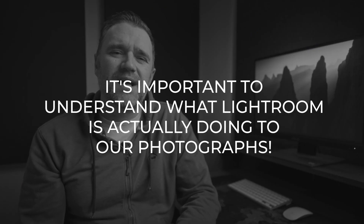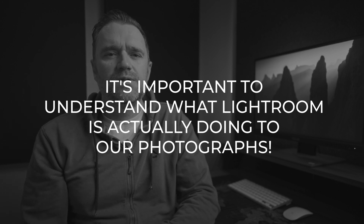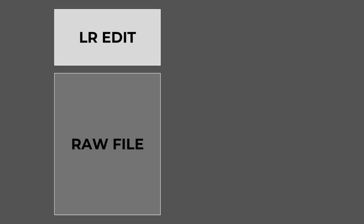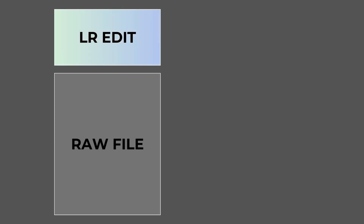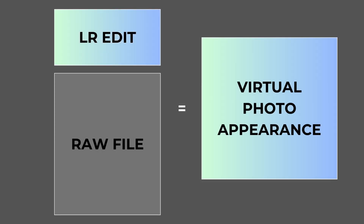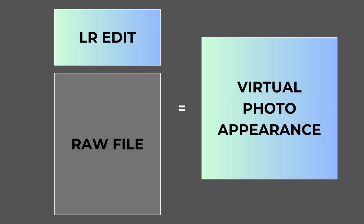Before we talk about AI Denoise, it's important to understand what Lightroom is actually doing to our photographs. Once we import a raw file into Lightroom, we have our raw file with a Lightroom edit sitting above it. When we first begin editing a photo, we start out with a blank edit, and as we add different effects and slowly build up an edit, the appearance of the raw file changes. At no stage do the Lightroom edits change the actual raw file data — they only change the virtual appearance of the raw file in Lightroom. All effects in the develop panel work this way, except for the AI Denoise feature.